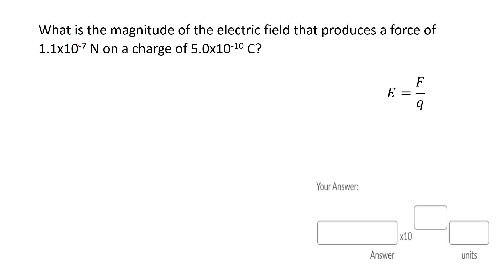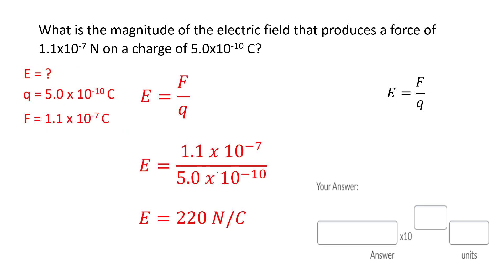What is the magnitude of the electric field that produces a force of 1.1 × 10⁻⁷ Newtons on a given charge? The problem gives you the charge and the force. Plug in all the numbers — use exponents or extra parentheses carefully — and you get 220 Newton/Coulombs. In scientific notation that's 2.2 × 10². The quick check: type 2.2 × 10² into your calculator and confirm it returns 220. The unit is Newton/Coulombs.